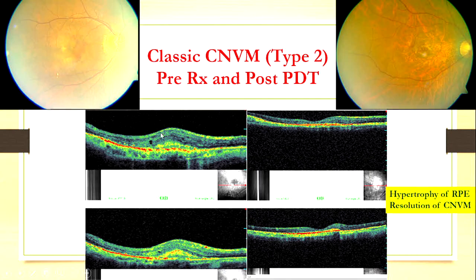And what about this? When you talk about CNVMs, they can be type 1 when they are under the RPE. They're type 2 when they are above the RPE. And they're type 3 if they arise in the substance of the RPE. Here, what you see is it's arising above the layer of the RPE — this is a type 2 CNVM.